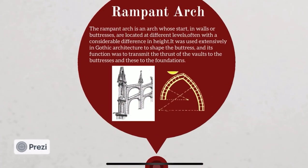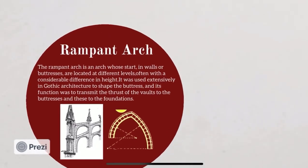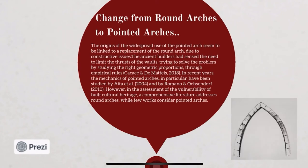Coming into the rampant arch — it is a type of arch whose start in walls or buttresses are located at different levels, often with a considerable difference in height. Geometric rules prevailed over scientific theories for a very long time in the study of arches and walls, and a true scientific formulation took place during the 18th and 19th centuries.